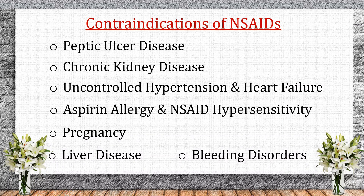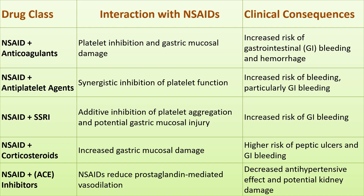NSAIDs potentially interact with several drug classes. NSAIDs inhibit platelet function and can cause gastric irritation, increasing bleeding risk. When combined with anticoagulants like warfarin or heparin, this effect is amplified, significantly increasing the risk of GI bleeding and hemorrhage. Aspirin and clopidogrel already inhibit platelet aggregation; adding NSAIDs further reduces clotting ability, leading to excessive bleeding. SSRIs impair platelet function by depleting serotonin in platelets; NSAIDs further inhibit platelet aggregation, increasing GI bleeding risk. Both NSAIDs and corticosteroids can damage the gastric lining, and when used together, the risk of peptic ulcers and GI bleeding is significantly increased.